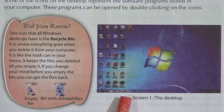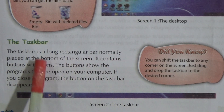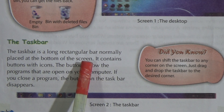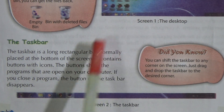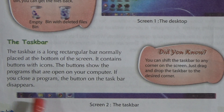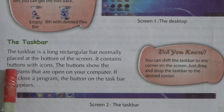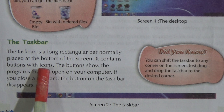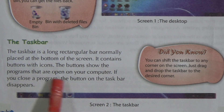Next we have the taskbar. The taskbar is a long rectangular bar normally placed at the bottom of the screen. Here is a clear picture of the taskbar — this long bar at the bottom of the screen. It contains buttons with icons. The buttons show the programs that are open on your computer.